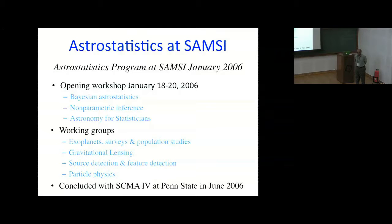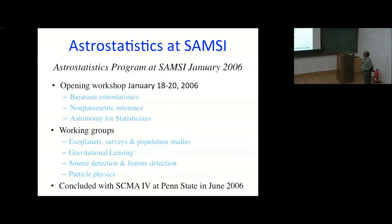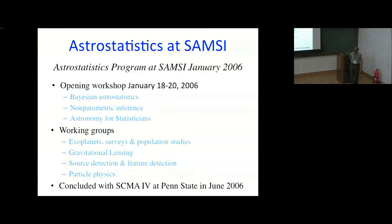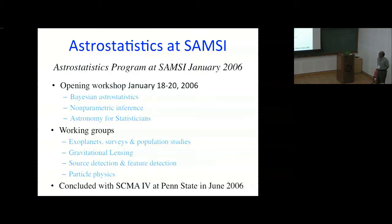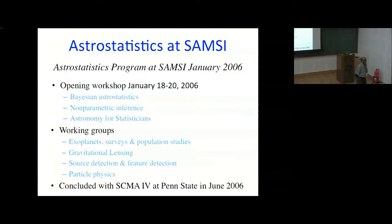Astrostatistics at SAMSI started a long time ago, not just with the program last September. The first program on astrostatistics was organized in 2006. Jim Berger was the director of the SAMSI program at that time. He asked me to propose a program in astrostatistics and helped me write the proposal. We started with an opening workshop. In those initial stages, astronomers and statisticians didn't talk to each other much and didn't understand each other's language.